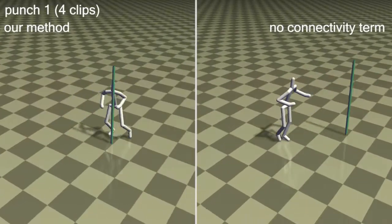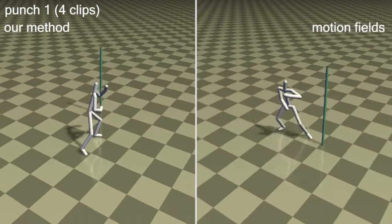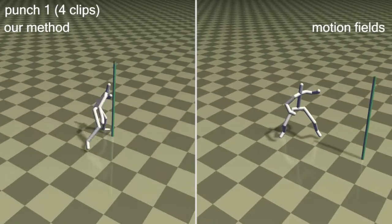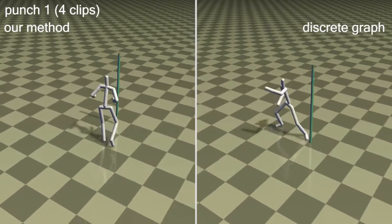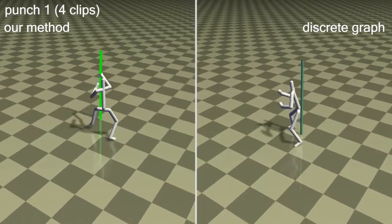On the more complex punching task, the connectivity term becomes critical for good results. Motion fields cannot accomplish this task, while the discrete graph controller cannot effectively pursue the target with so few example motions.